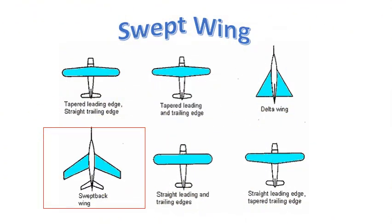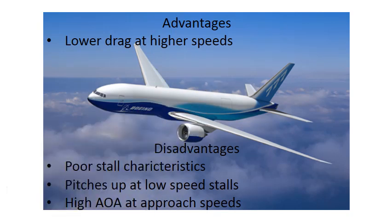Next we're going to move on to the swept back wing — this is what you see on all your airliners. They're going to be pointed towards the back and will usually have a taper, getting thinner as you get to the outside of the wing. The advantage: it has low drag at higher speeds, which is why airliners can fly at 500 miles an hour without too much trouble. They're more efficient at those high speeds.